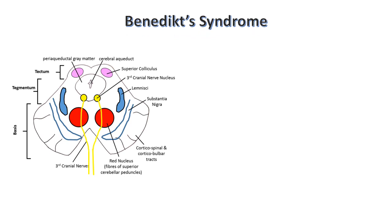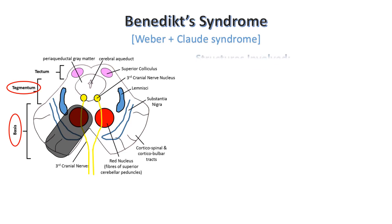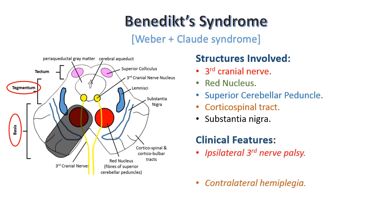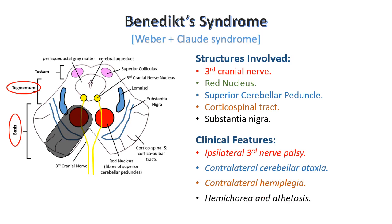Next is Benedict syndrome. Here the lesion involves the basis plus the tegmentum, so we can say it is Weber plus Claude's syndrome. Structures involved will be the 3rd cranial nerve, red nucleus, superior cerebellar peduncle, and corticospinal tract. Additionally, there is also involvement of the substantia nigra. Clinical features will be ipsilateral 3rd nerve palsy, contralateral hemiplegia, contralateral cerebellar features like ataxia and tremors, and due to involvement of the substantia nigra, movement disorders like hemichorea and athetosis. So these three were the ventral midbrain syndromes.